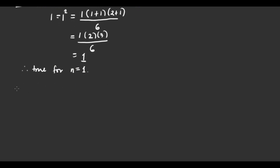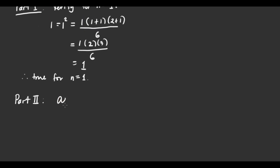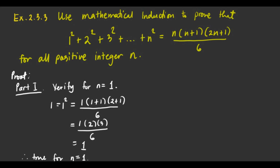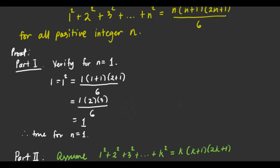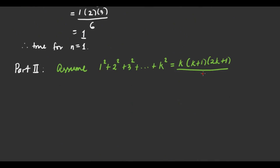Now let's have Part 2. For Part 2, I'm going to use a different color. We're going to assume for n equals k. So we assume: 1 squared plus 2 squared plus 3 squared plus ... plus k squared is equivalent to k times (k plus 1) times (2k plus 1) over 6. We're going to assume this, and then we're going to prove the next step.